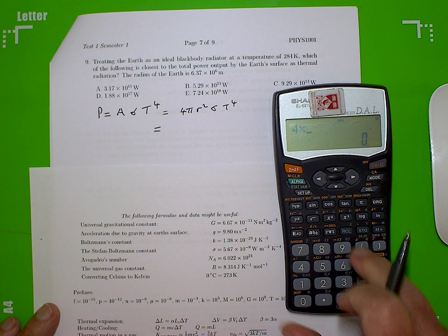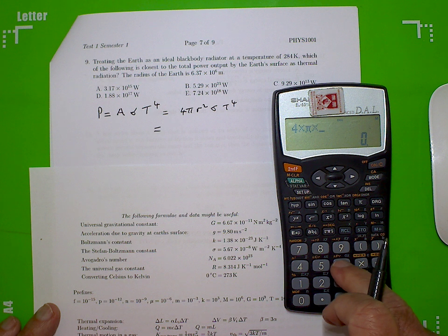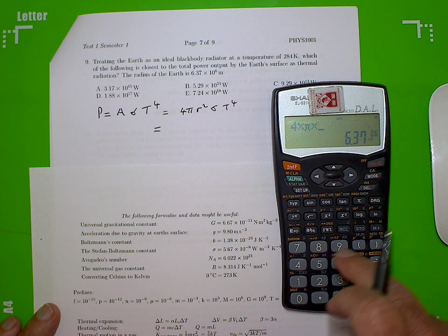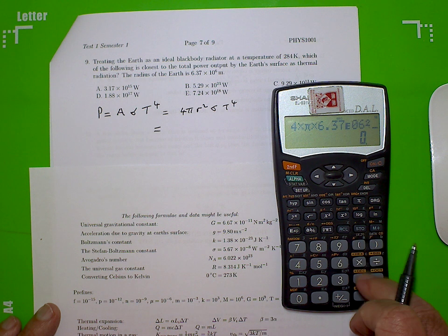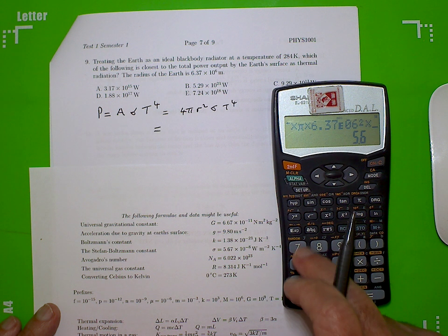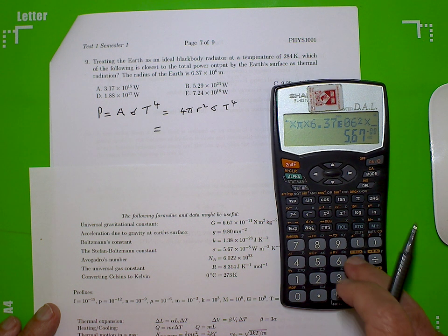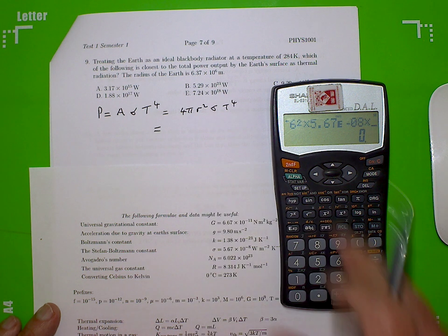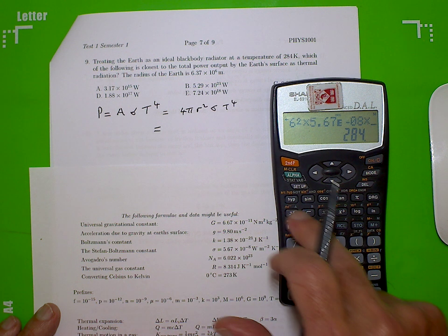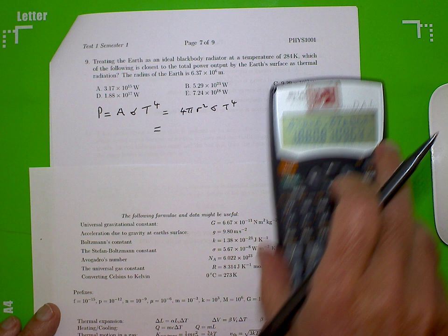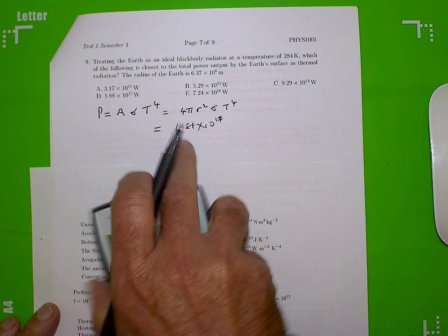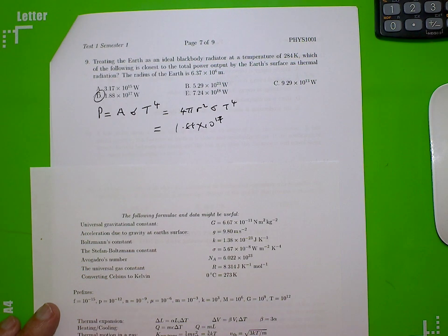So 4 times pi times 6.37 by 10 to the 6 squared times sigma, which is 5.67 by 10 to the minus 8 times T to the 4th. It's 284 Kelvin, times 284 Kelvin, raised to the power 4 equals, and I get 1.88 by 10 to the 17. And there it is. Okay.